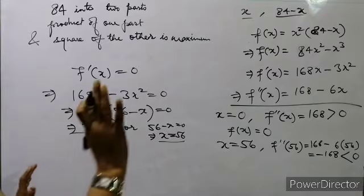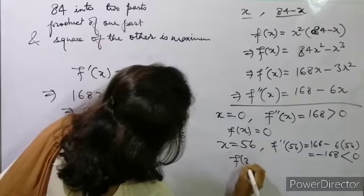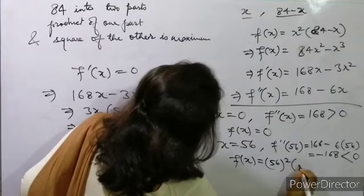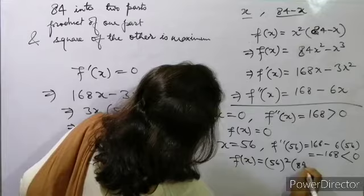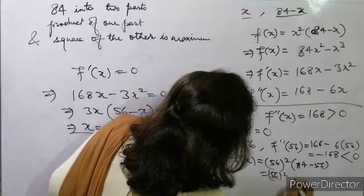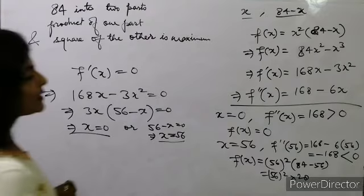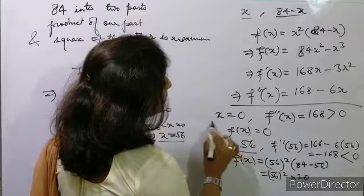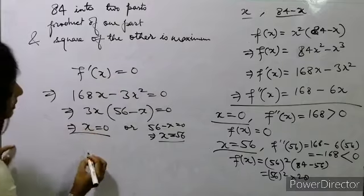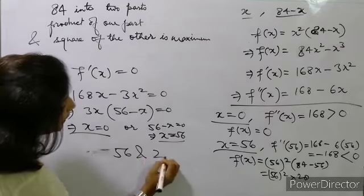So f(56) = 56²×(84 - 56) = 56²×28, which is the maximum value. So the two parts of 84 are x = 56 and 84 - 56 = 28.